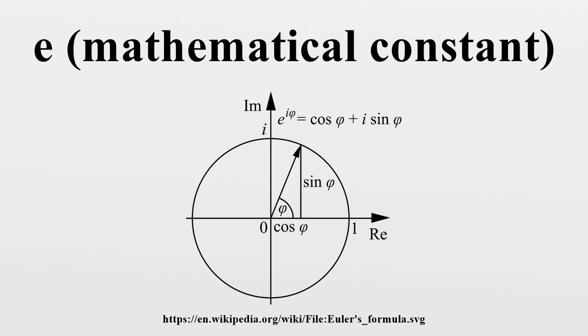The first 10-digit prime in e is 7,427,466,391, which starts at the 99th digit.